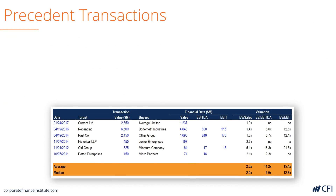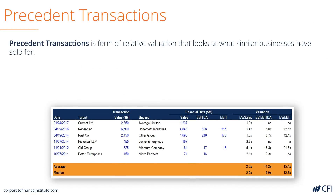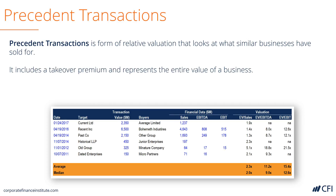Now let's look at precedent transactions. Precedents are also a relative form of valuation, meaning we're looking at other companies and what they were acquired for — what was paid to buy the entire business. So it includes a takeover premium, which might actually make it a higher valuation than a regular public company comparable. It's important to note that precedent transactions, since they took place in the past, can become stale dated if they're several years old. You follow the same steps as you did with comparable company analysis to look at precedent transactions.